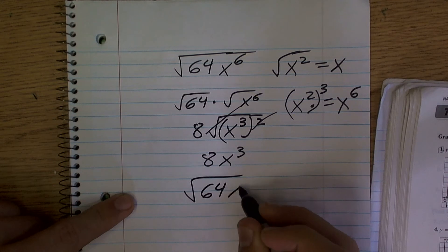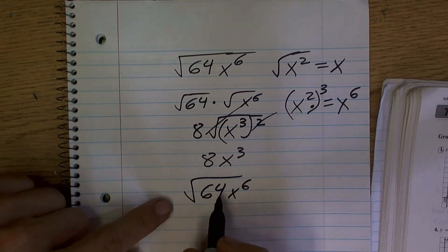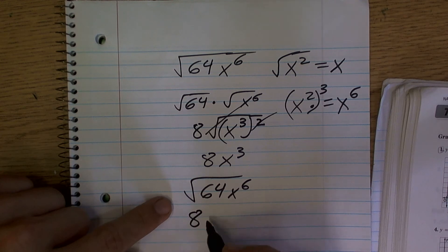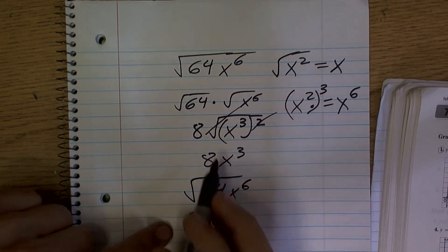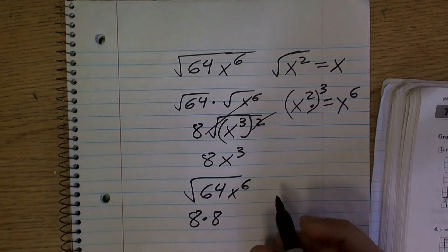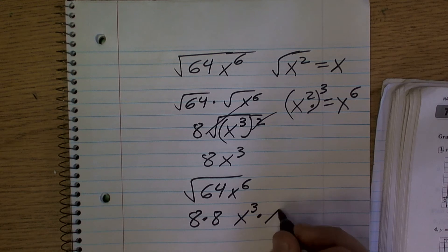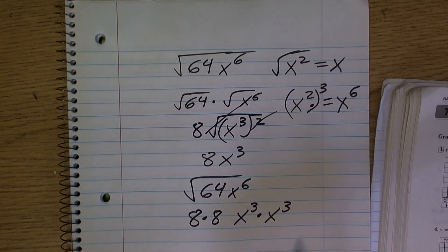So we have 64 x to the 6th. Another way, remember how we write, we know that this is represented as 8 times 8, and that's how we get our 8 out. Well, x to the 6th can be rewritten as x cubed times x cubed.